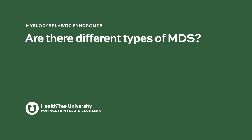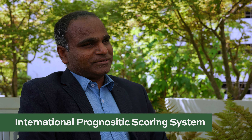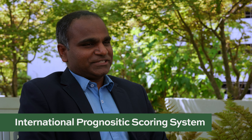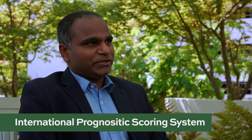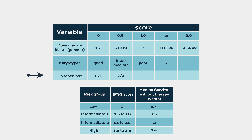Are there different types of MDS? MDS, based on the international prognostic classification, is classified broadly into low risk and high risk. Most of the time it is based on the blood counts, the number of blasts or abnormal cells in the bone marrow, and what type of chromosome abnormalities are present in the bone marrow.